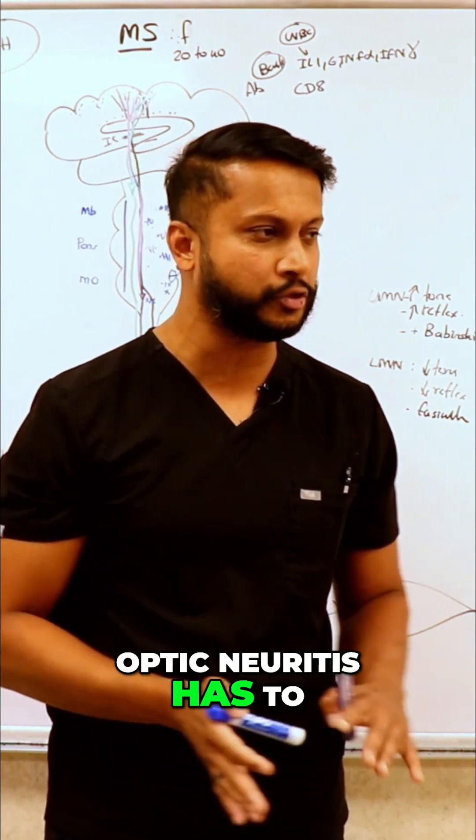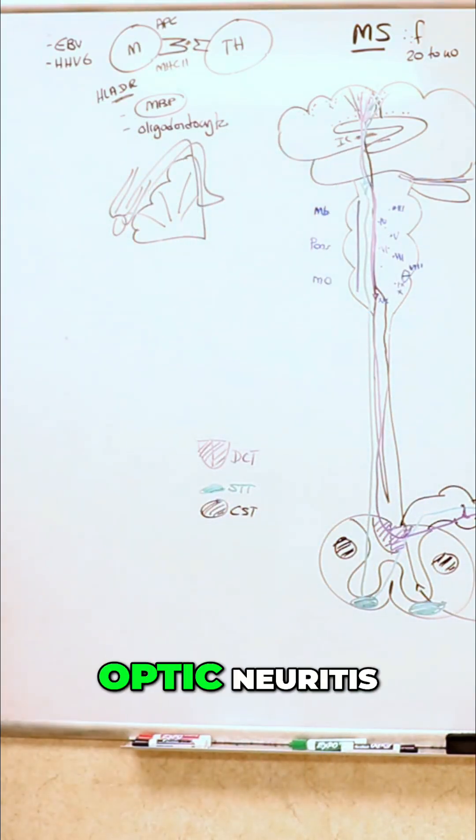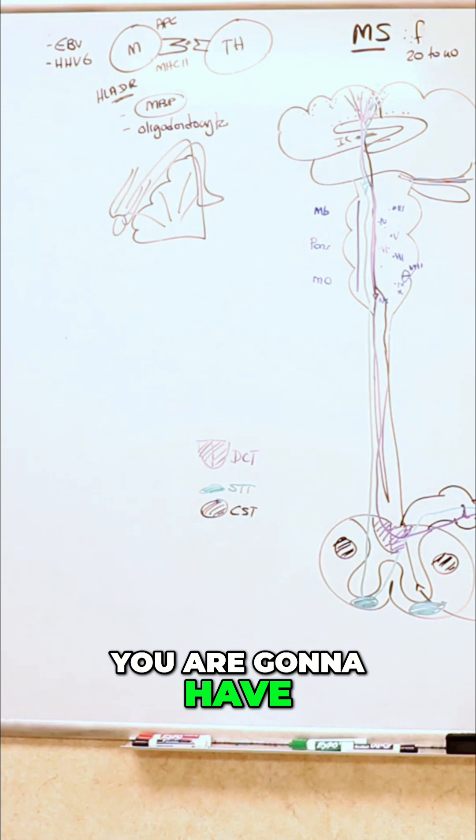Optic neuritis has to come to your mind the moment somebody says MS. First off, straight off by saying optic neuritis, you're going to have visual disturbances.